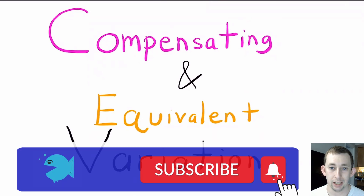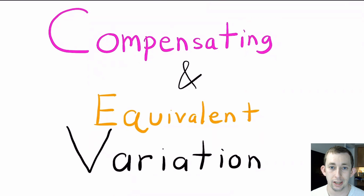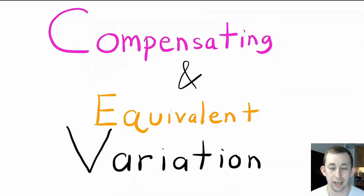The idea behind compensating and equivalent variation is we're trying to measure the impact to a consumer's welfare of a price change. The easiest way to interpret such an impact is to try to measure that impact in terms of dollars. So compensating and equivalent variation — we're trying to put a dollar value on the impact to someone's utility of a price change.